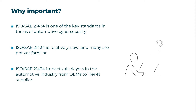The ISO SAE 21434 affects the overall value chain and thus all supply chain members. From OEMs to Tier 1 or lower level tiers, each level of the supply chain is affected and is required to implement the principles proposed by the ISO SAE 21434.